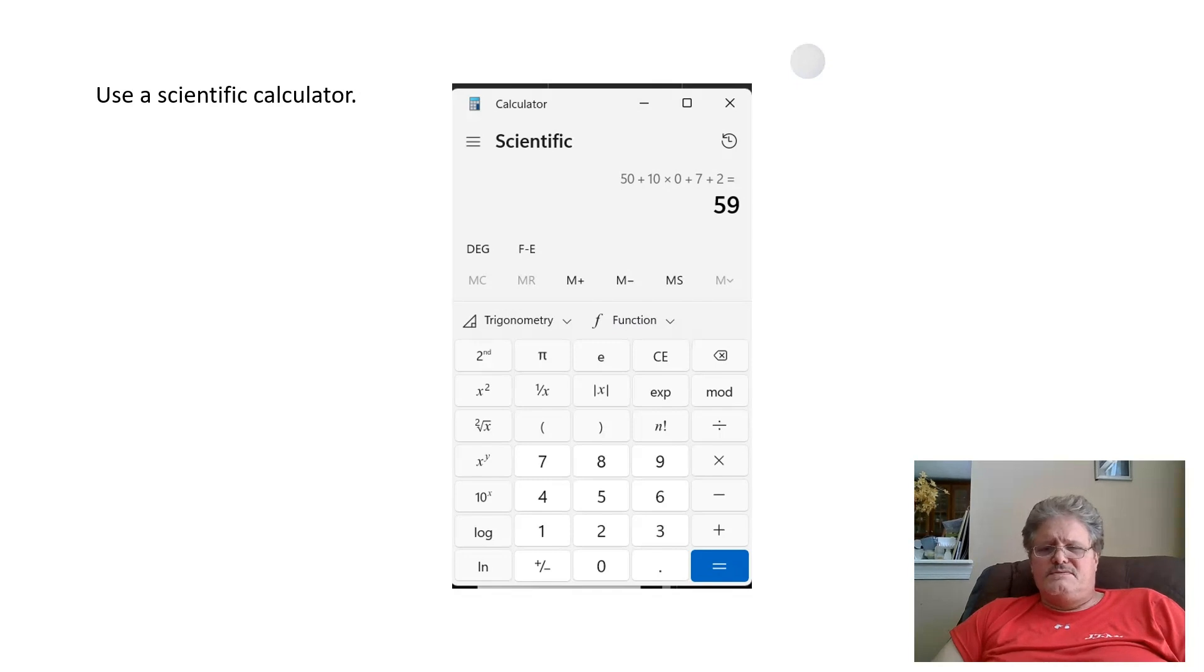If you've got a Windows machine, I think this computer's got Windows 11, a lot of times they'll default for standard mode. It needs to be in scientific mode. You see here I get 59: 50 plus 10 times 0 plus 7 plus 2 equals 59.